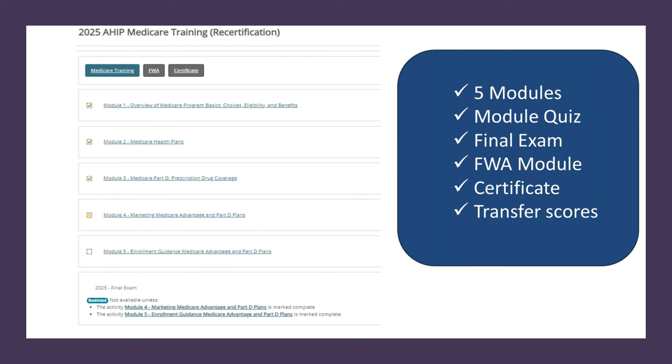Module five is all about enrollment guidance — how you actually enroll members and what guidance is related to that. This is the first year that AHIP has allowed existing agents to skip the training portions for modules one, two, and three and go directly to the test. If you pass those quizzes for modules one, two, and three, you can then advance on to module four.